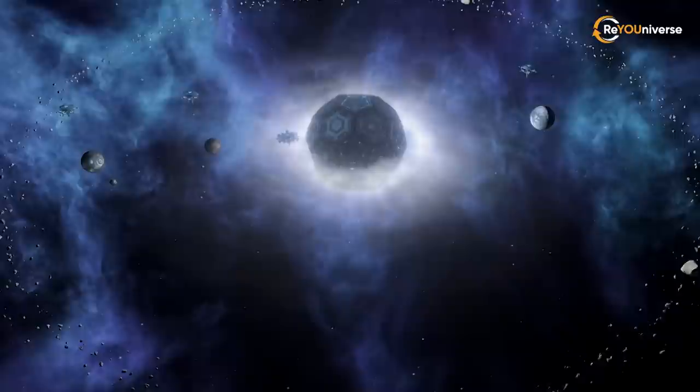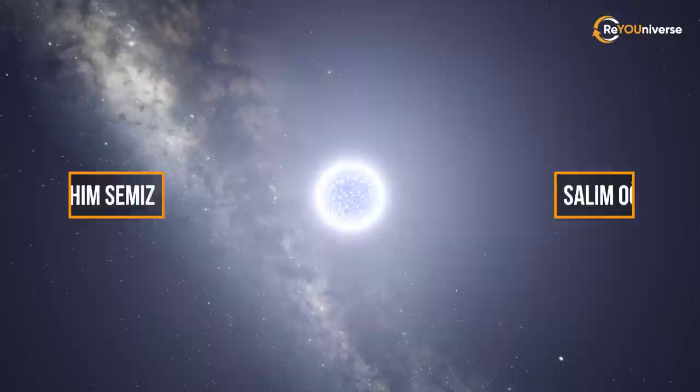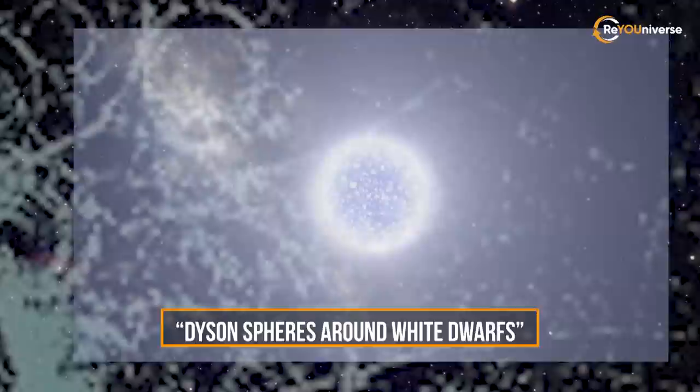Furthermore, if we think of this structure being heated up by the Sun up to 1,000 Kelvin as harmless, then the radius of this structure will be about 23 million kilometers, which is within Mercury's orbit. Ibrahim Samiz and Salim Ogre calculated the radius for different types of white dwarfs in their study titled Dyson Spheres Around White Dwarfs.